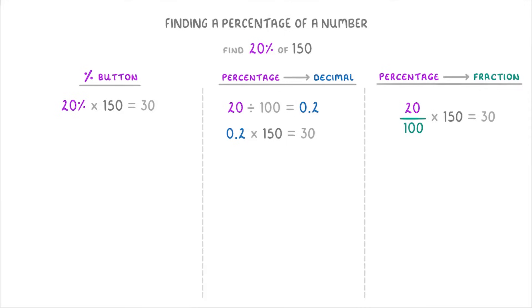If you didn't have a calculator though, then it would probably be easier to simplify the fraction. So let's divide 20 over 100 to 1 over 5 first, by dividing top and bottom by 20. And then just multiply that 1 fifth by the 150 to get 30.